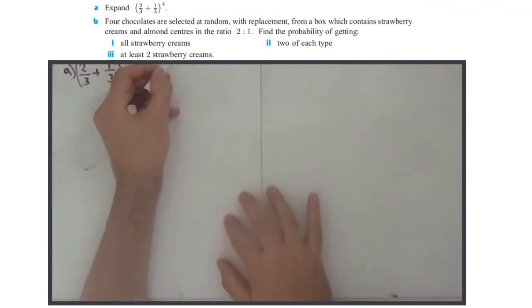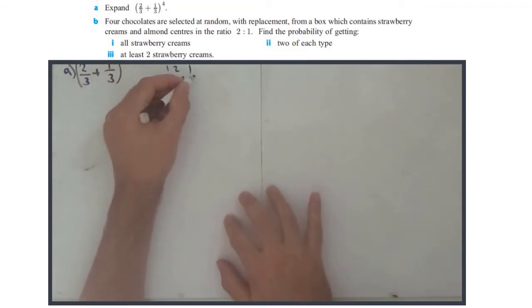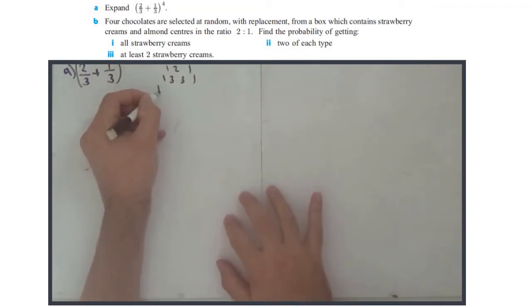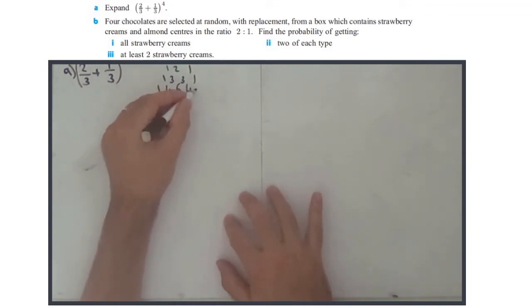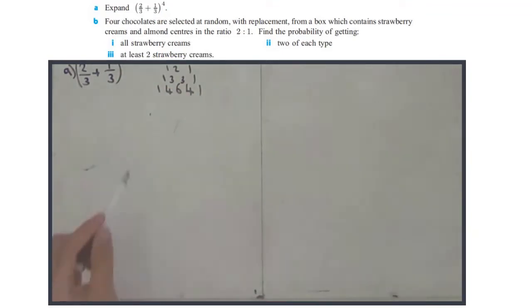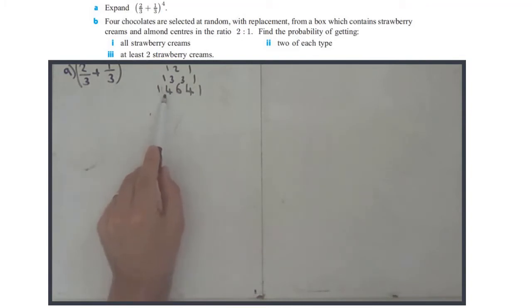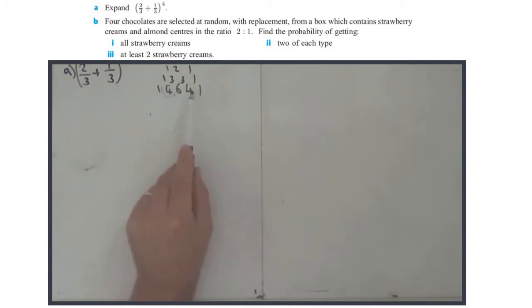So the rows of Pascal's Triangle go: one, one; one, two, one; one, three, three, one; and then one, four, six, four, one. I know I'm on the right row because the second number in is always N — so that's the four, second number from either side.